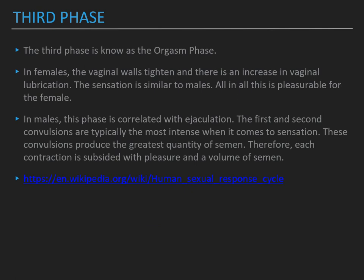The third phase is known as the orgasm phase. In females, the vaginal walls tighten and there is an increase in vaginal lubrication. The sensation is similar to males and is pleasurable for the female. In males, this phase is correlated with ejaculation. The first and second convulsions are typically the most intense in sensation and produce the greatest quantity of semen. Each contraction is accompanied by pleasure and a volume of semen. This is from Wikipedia.